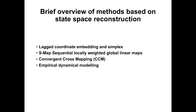In terms of specific techniques, we'll talk about three different things. First, Lakor Embedding with Simplex. Second, SMAP, which stands for Sequential Locally Weighted Global Linear Maps. Third, Convergent Cross Mapping, which is a way to determine if things are causally related within a dynamical system. Finally, I'll briefly discuss empirical dynamical modeling, which combines all these tools to get a clearer picture of what's really going on.